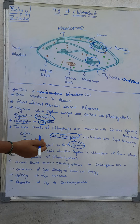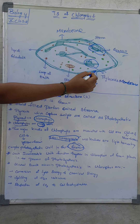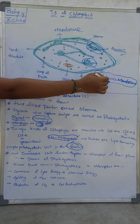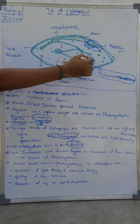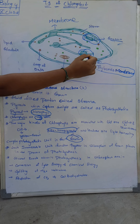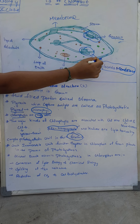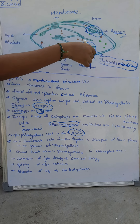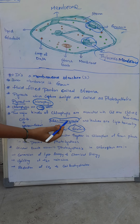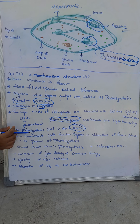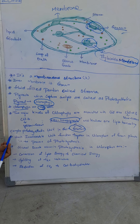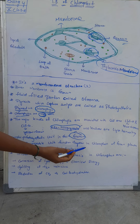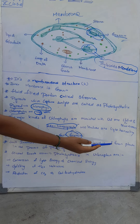Chlorophyll a and b are present in the thylakoid membrane, which is also the granum. In each chloroplast, there are 250 to 400 pigments in each granule. Such innumerable units function together in the chloroplast of green plants in the process of photosynthesis.